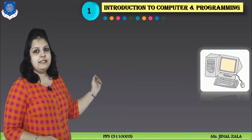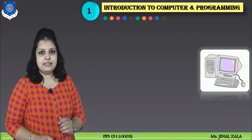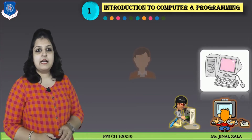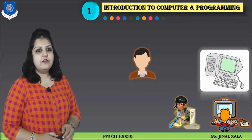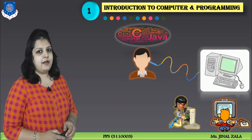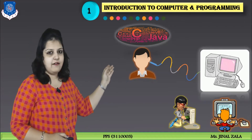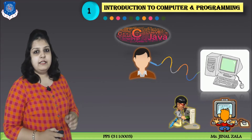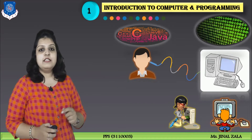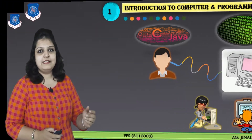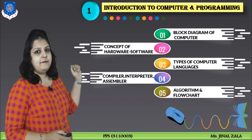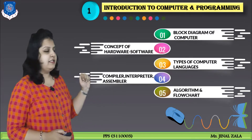Look at this image — what is this? This is a computer. Everybody knows what a computer is. It is a combination of hardware and software, but it can't run automatically. If a user wants to connect with the computer, we can connect it with different programming languages like C, C++, Java, etc. But this machine can understand only one language, and that is binary language. So these different topics — block diagram of computer, concept of hardware and software, and different types of languages — we are going to discuss in our first module.